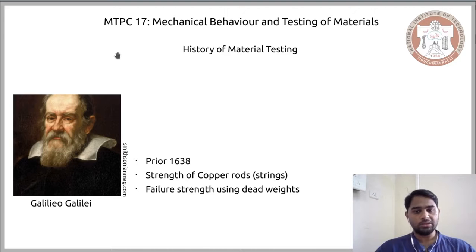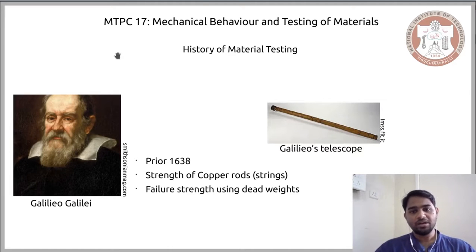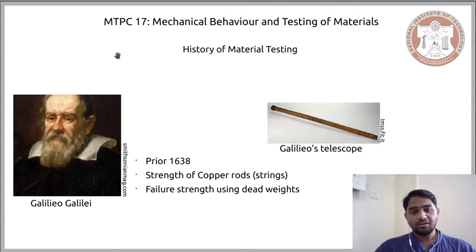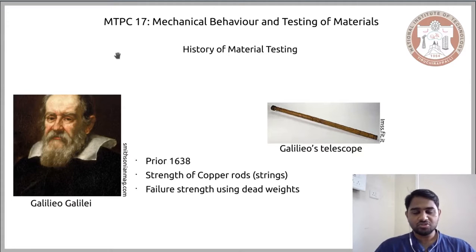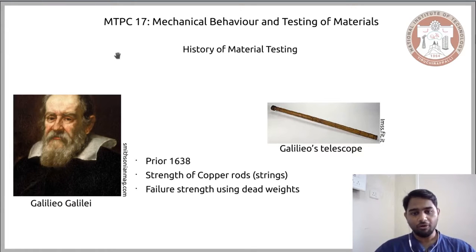The approach he used to test his copper rods was rather simple — all he did was hang weights at the bottom of the copper rods or strings and kept adding weight until the copper rod failed. The reason he wanted to do such a strength analysis of copper is because his telescope comprised wood and copper. He used copper strings to hold the wood tubes together, and depending on the strength of the copper rods, the structure of the telescope varied. A high-strength material meant a more sturdy telescope. After a certain degree of research, he settled on copper strings, and this research involved testing the strength of copper.